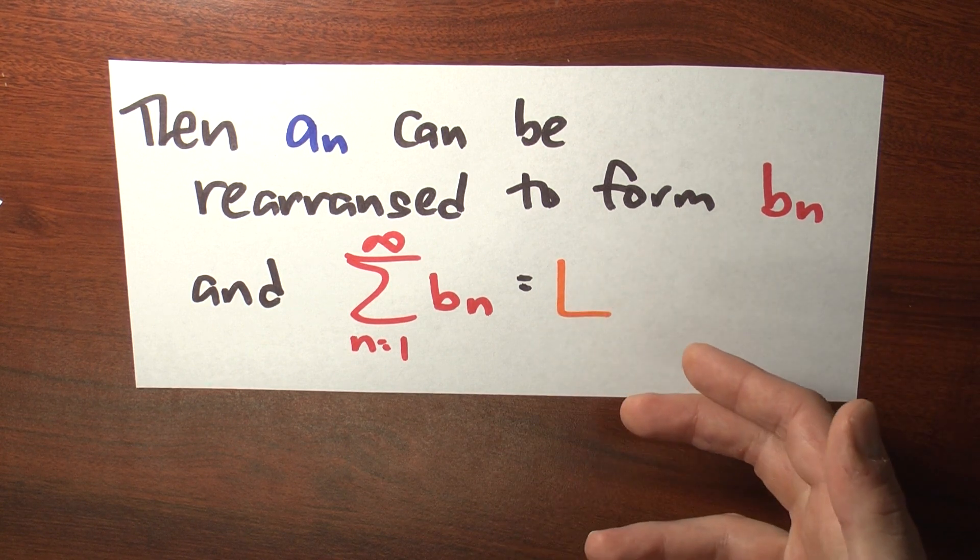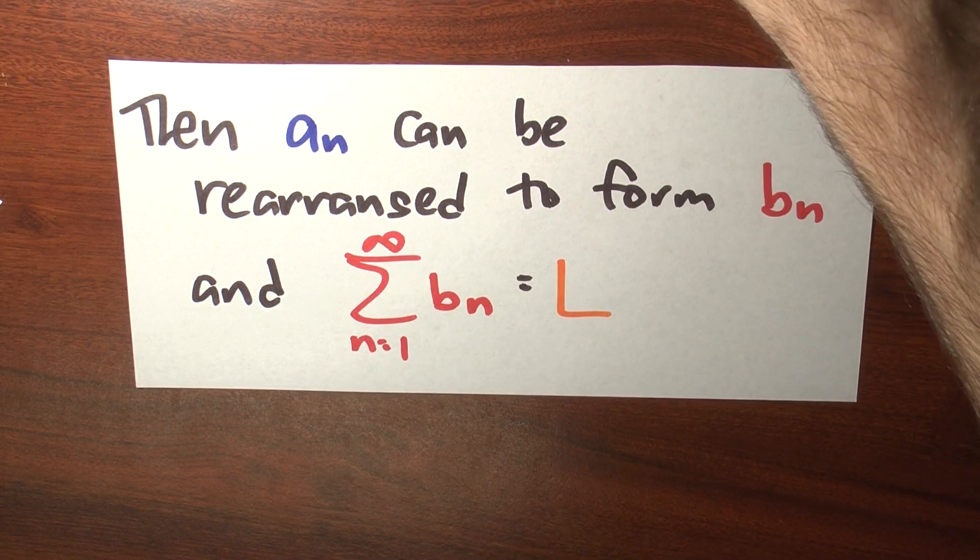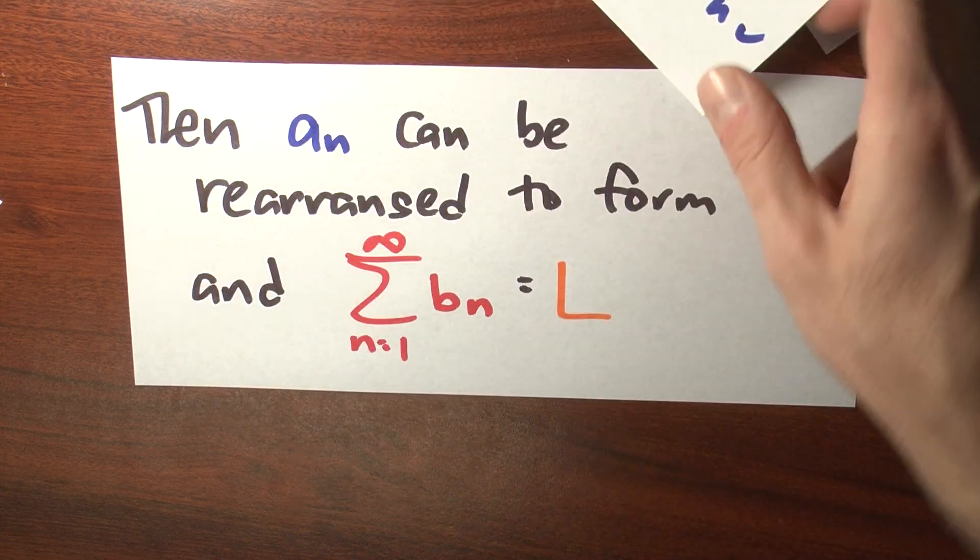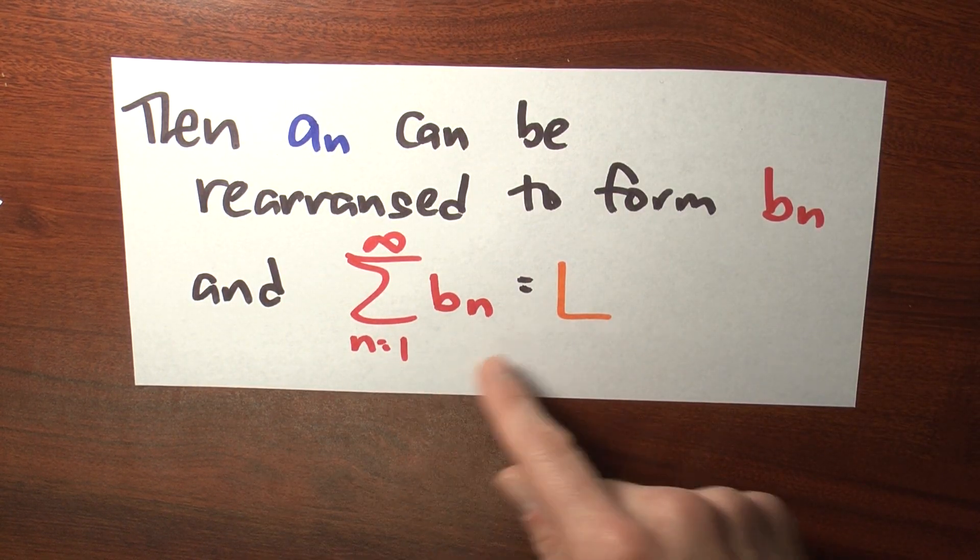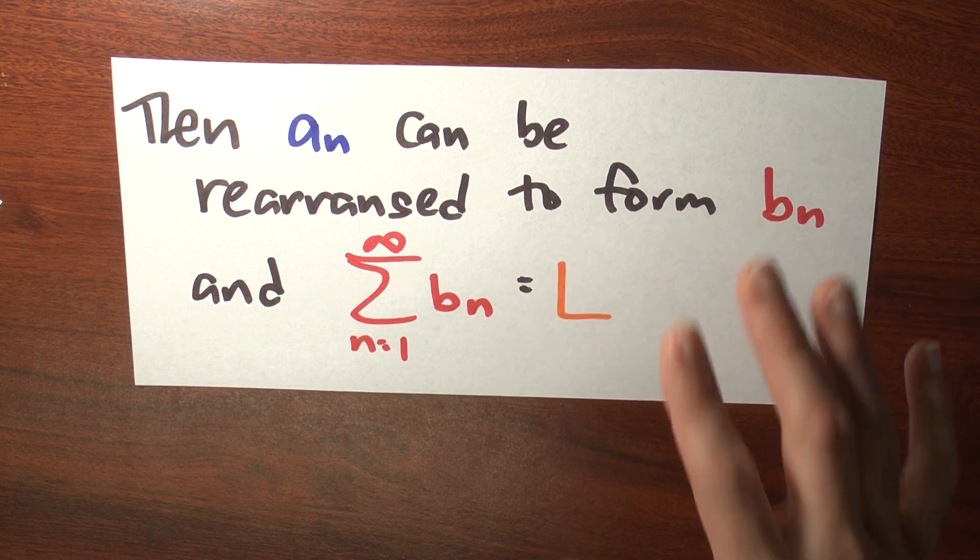And you picked L. What this is saying is that if you're given a conditionally convergent series, you can rearrange the terms so that that series sums to any number that you'd like.